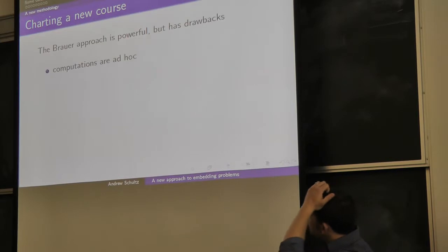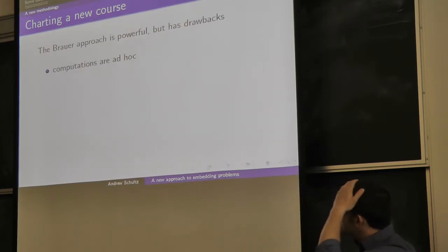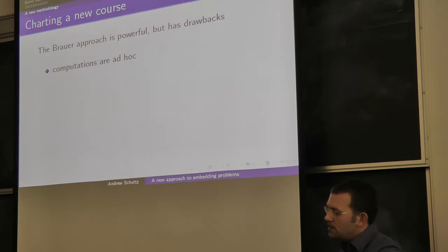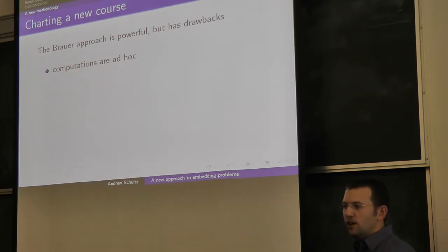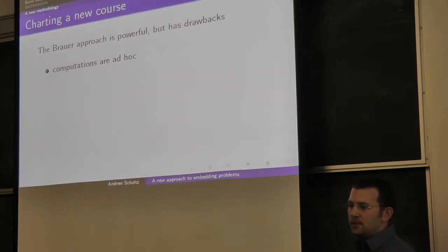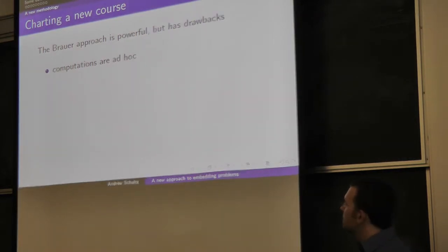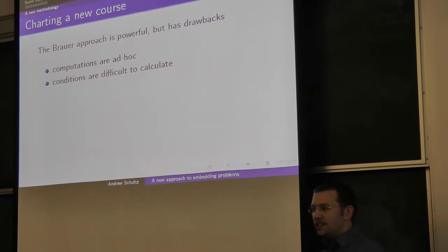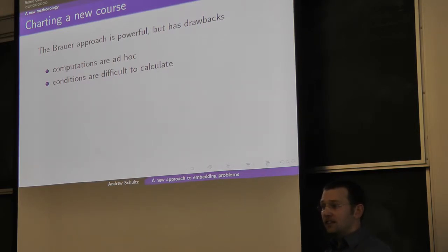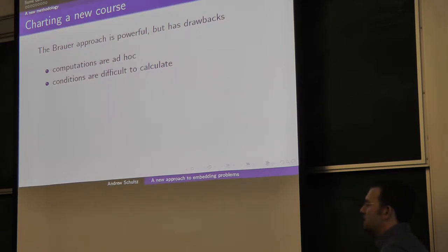There are some problems with this Brauer embedding problem approach. One problem is that when you try to represent these obstructions in terms of explicit algebras, any time you change the gamma and look at a different extension, you just have to start all over again. Everything is extremely ad hoc, and even when you have the algebra in hand, it can be very difficult to do the calculations needed to turn the vanishing of that obstruction into an arithmetic condition.